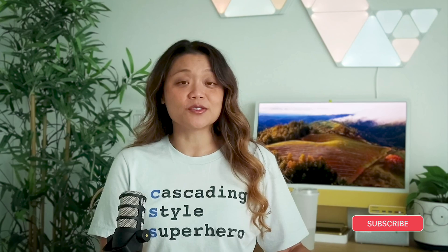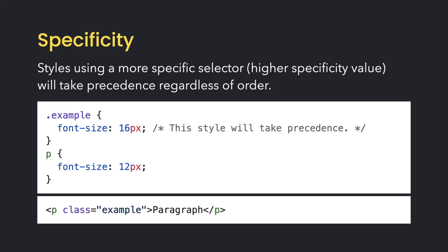However, as mentioned earlier, the browser uses another factor to determine which styles take precedence. While source order is important, it can be overridden when a more specific selector is used. This concept is called specificity. Styles declared using a more specific selector will take precedence, regardless of their order in the style sheet.